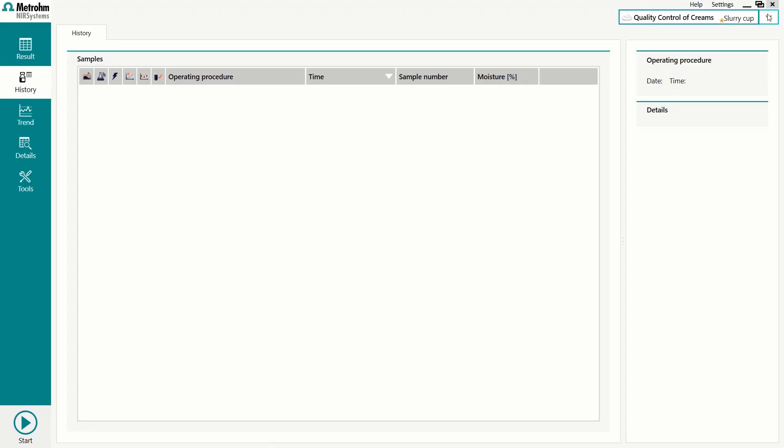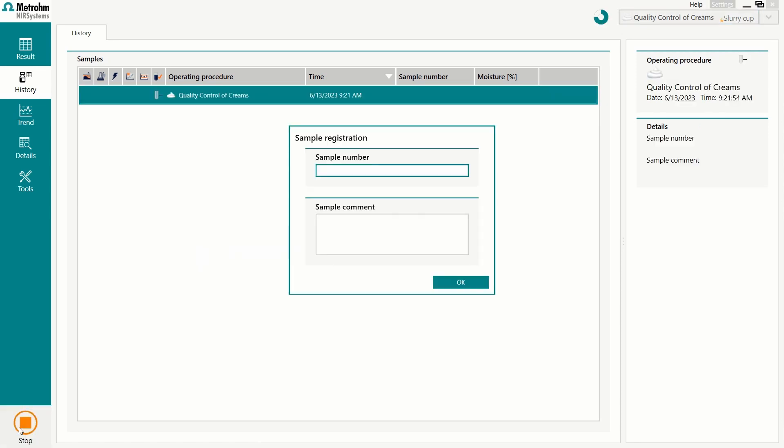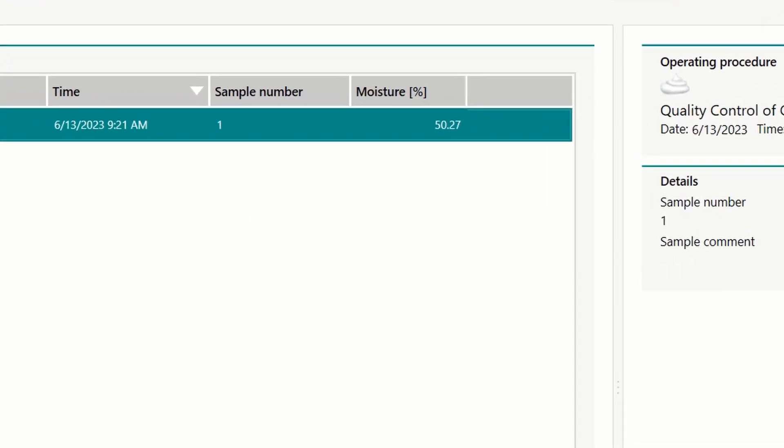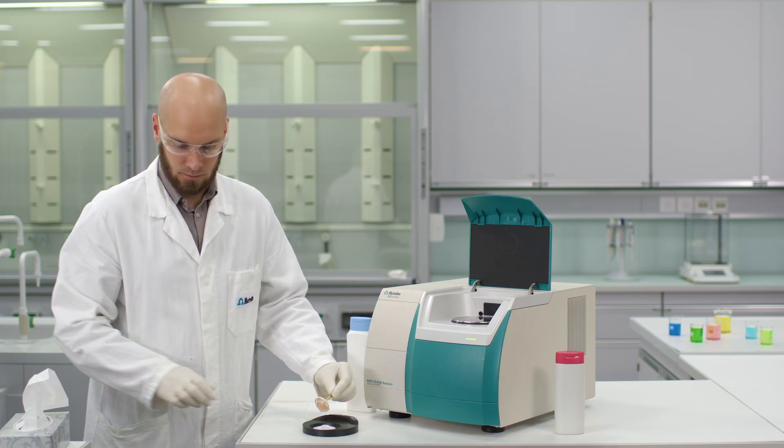Select the corresponding operating procedure in the VisionAir software and press start. In less than one minute, you get the results for the different sample parameters.